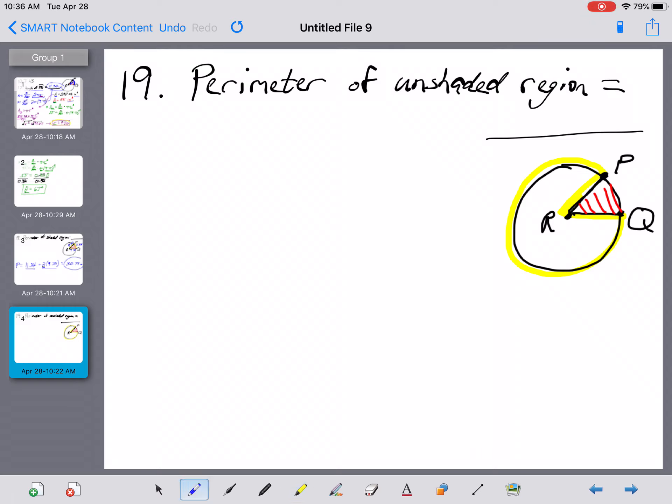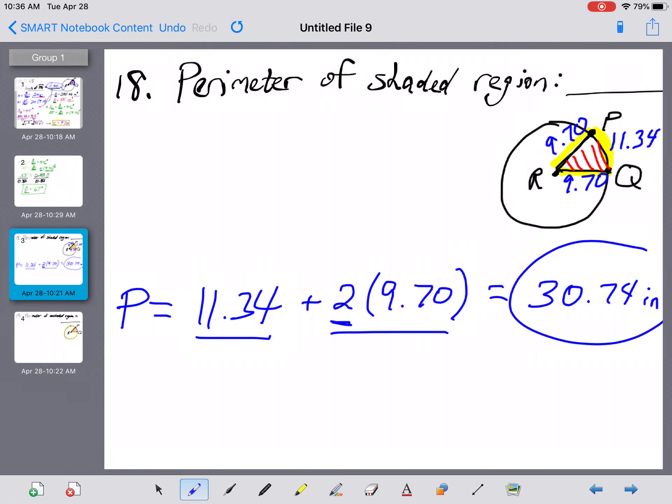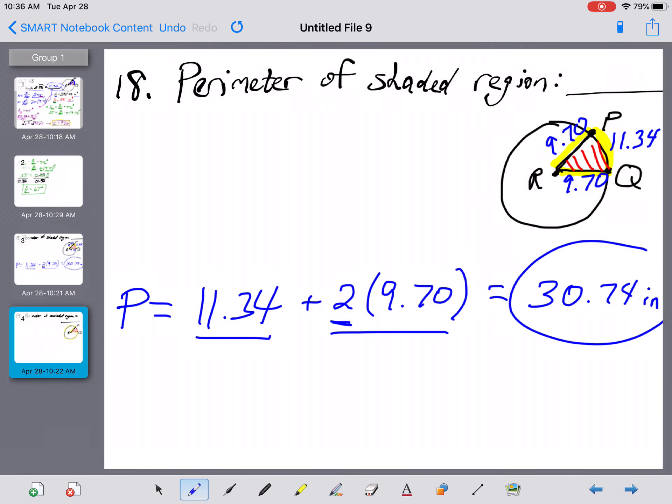All right, so here's what we know. We know that in that shaded region, the measure of arc PQ was 11.34 inches. Let me write that right there. What I think we're going to need to find, here's probably the way that I would do it. The circumference of this circle, I don't think it's something we've found yet. It shouldn't be too tough.